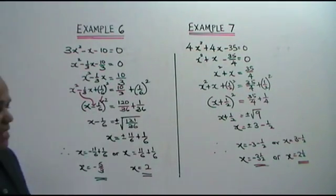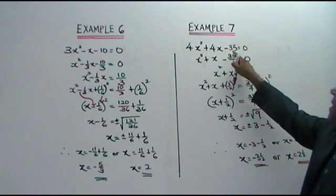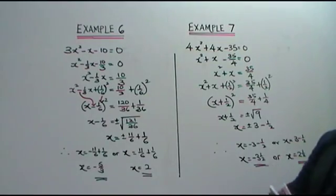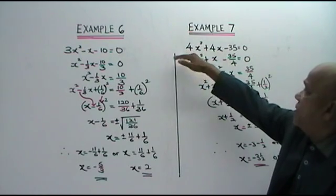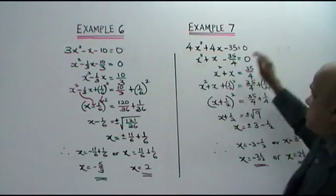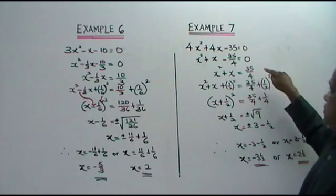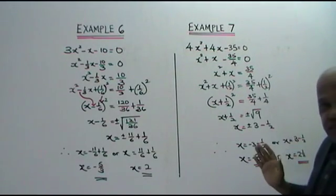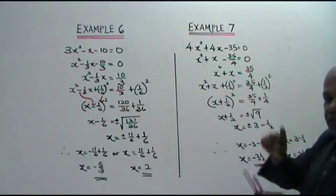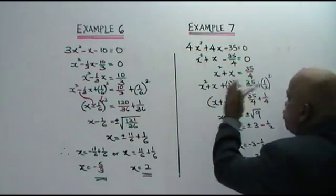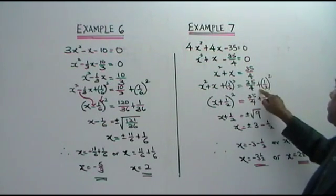Example 7: 4x squared plus 4x minus 35 equals to 0. As usual, divide all by 4. All the terms divide by 4 — you get this step. Negative 35 over 4, bring it to the right. Next step: the coefficient of x here is 1. So you take 1, divide by 2, square it, and add to both sides. So 1 over 2 squared here, plus 1 over 2 squared on this side.